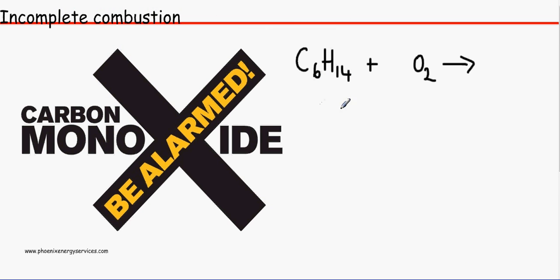Incomplete combustion is very dangerous. That's why our boilers need to be serviced regularly. That's what happens when we have a limited supply of oxygen. For example, with the Bunsen burner, when we close the air supply hole, we notice an orange flame due to the incomplete combustion of the fuel. When we open it, it turns blue. It's getting all the oxygen it needs.